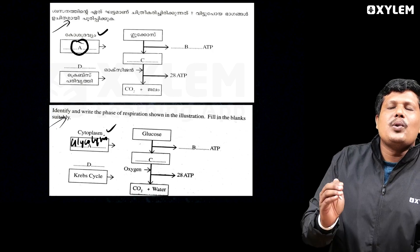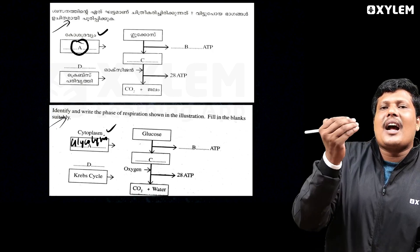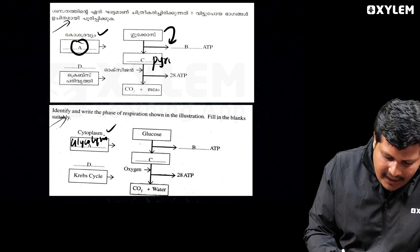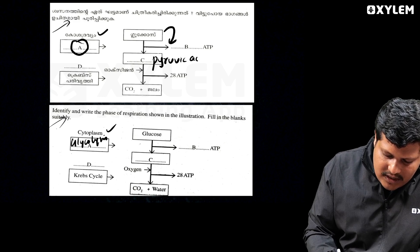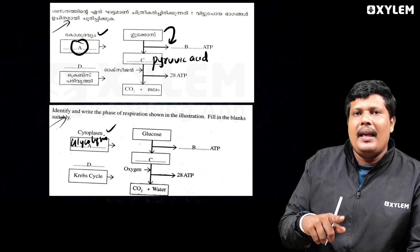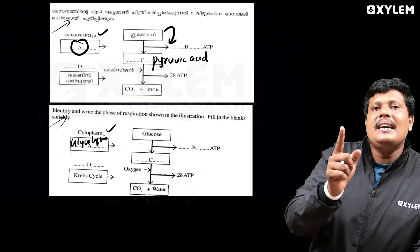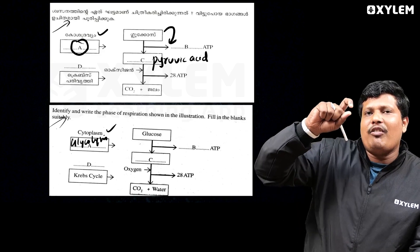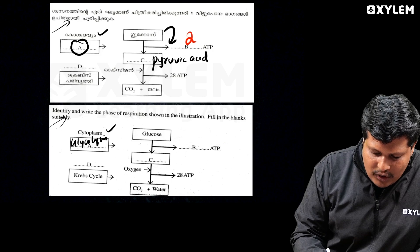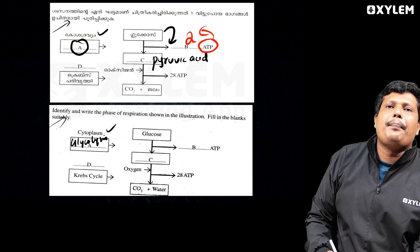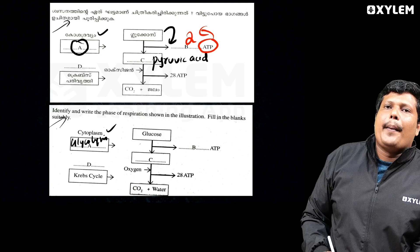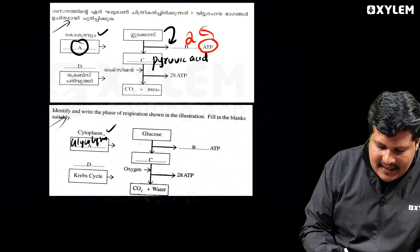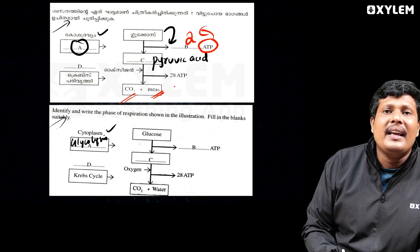Glycolysis is the process by which glucose is converted to pyruvic acid.